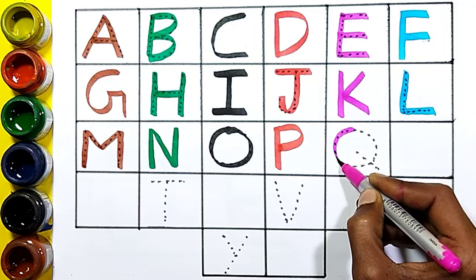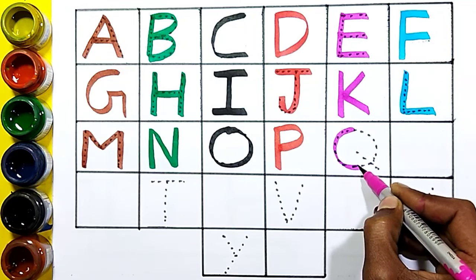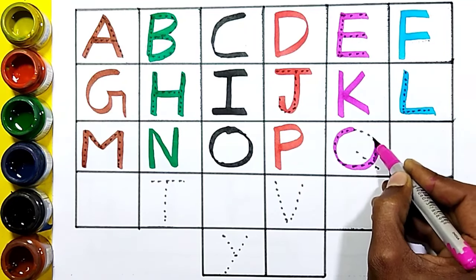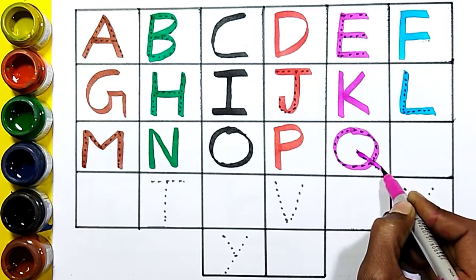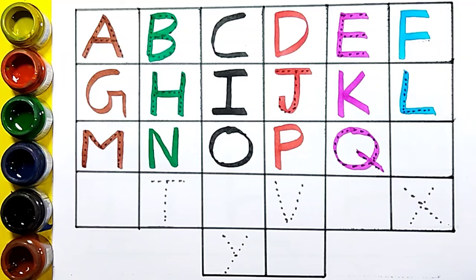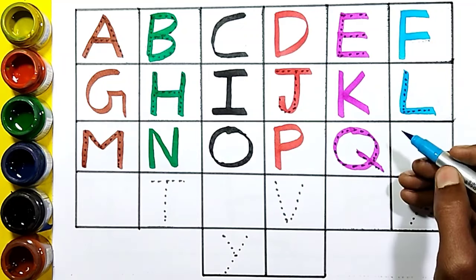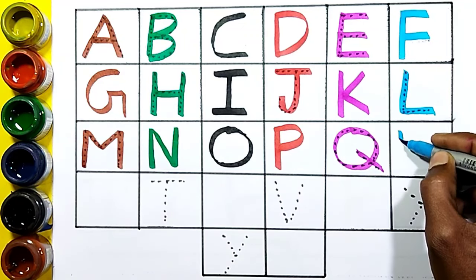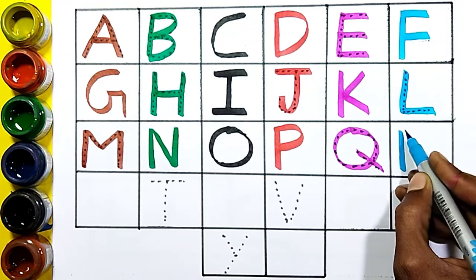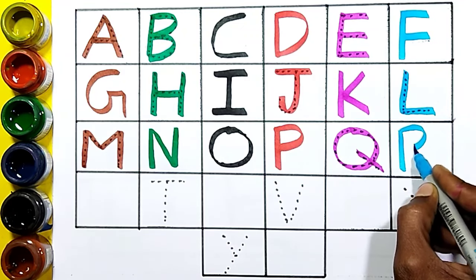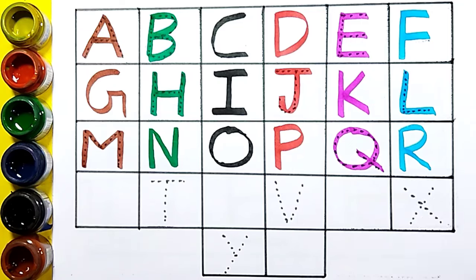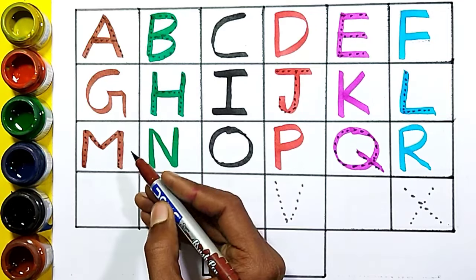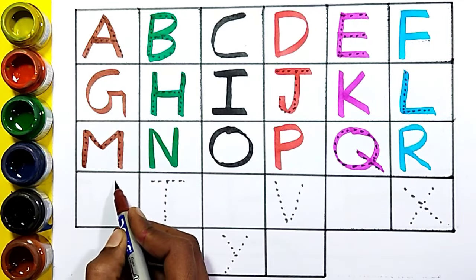Q, Q for queen, sky blue color. R, R for rat, brown color.